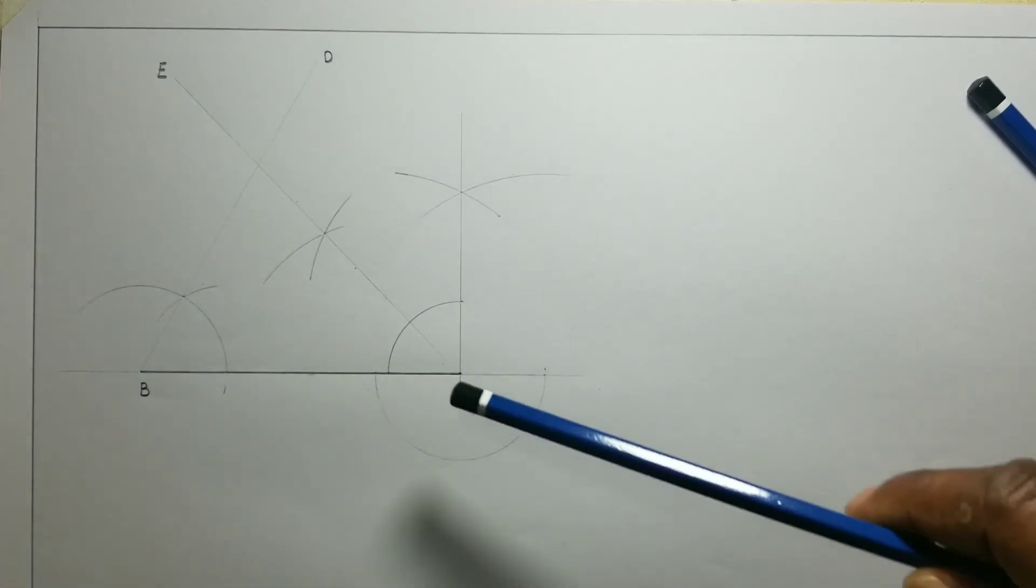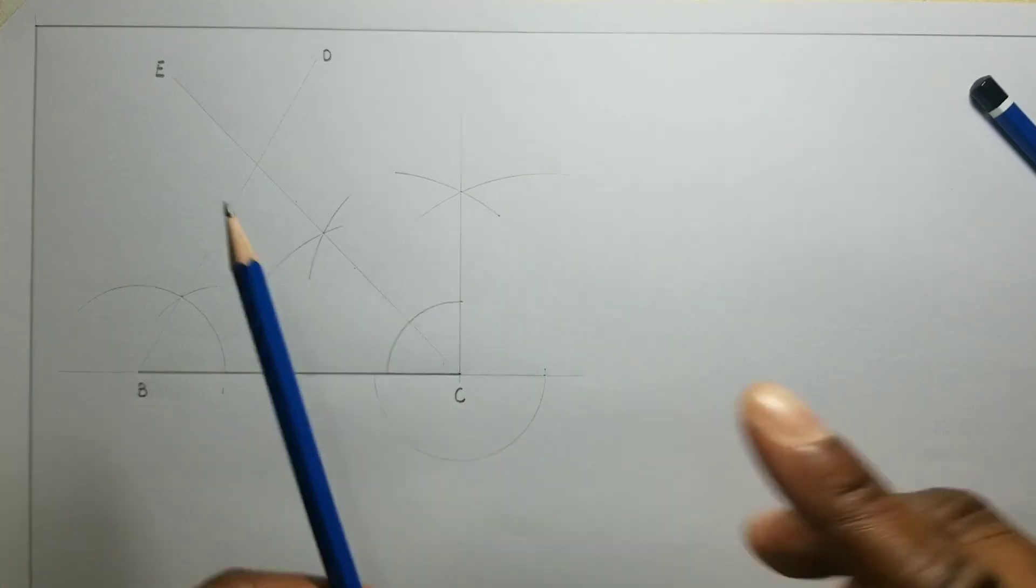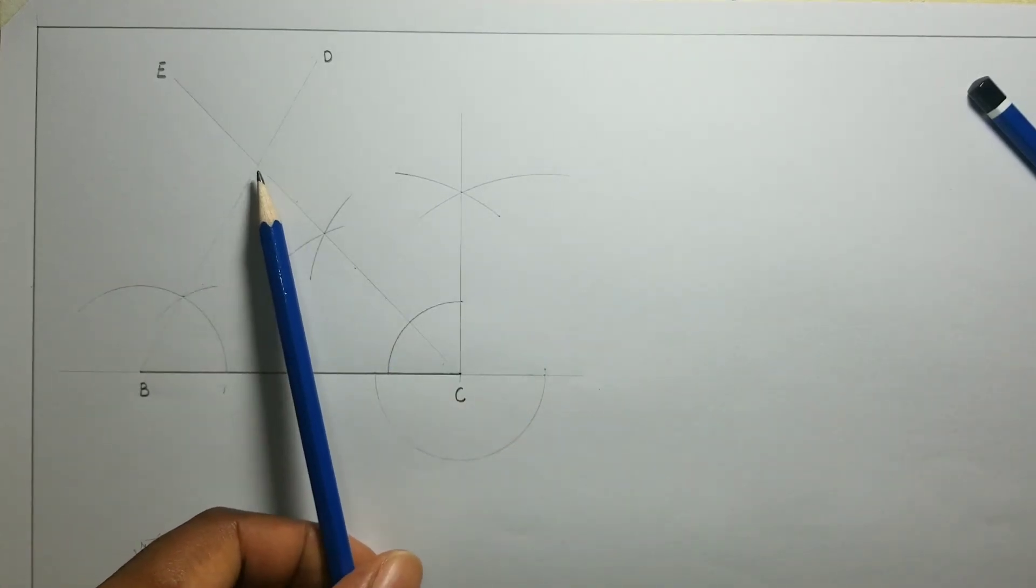Now where the C D line and B D line intersect each other, which is right here, is the top of our triangle. So we will call this point A.